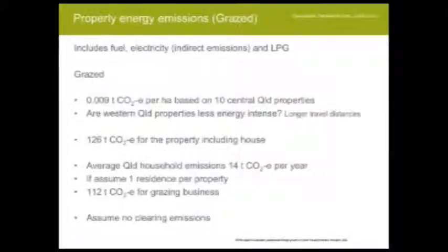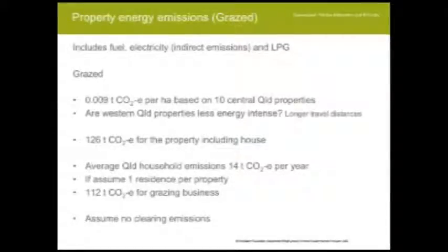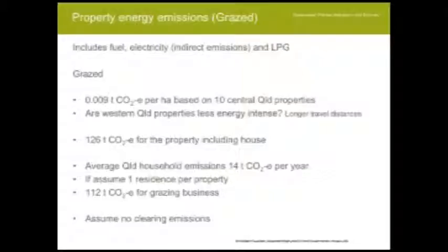Moving on to property energy emissions — this includes fuel use: burning diesel, petrol, electricity (even though electricity emissions are generated off-site, they're attributed to the business), and liquid petroleum gas. We've done surveys on central Queensland properties, and AgForce has been involved in some of these surveys. The data shows 0.009 tonnes of CO₂ emitted per hectare on a central Queensland property. You could argue western Queensland properties are higher or lower in energy efficiency, but that's the number we use. Multiplying by total hectares gives 126 tonnes of CO₂ equivalents emitted.